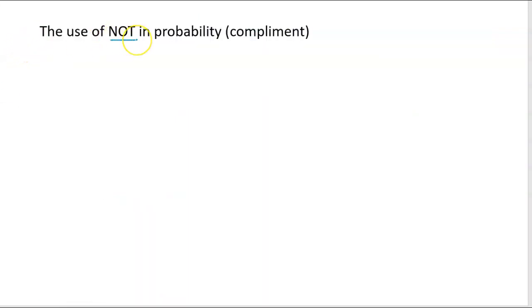Now I want to just talk about these pieces. So the use of not, we call this the complement. So if I have the probability of E and the probability of not E, which is this little mark here, together these are going to equal one.